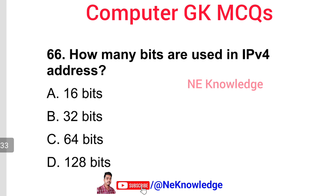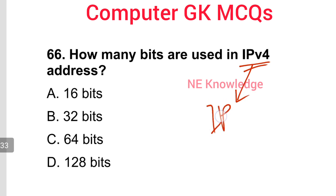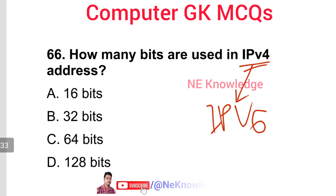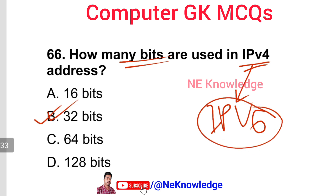Question number 66: How many bits are used in an IPv4 address? IPv4 uses a 32-bit address. Option number B is the correct answer. IPv6 uses 128 bits.